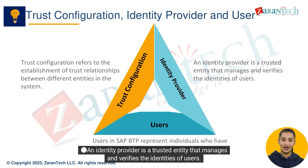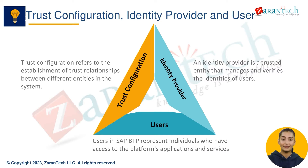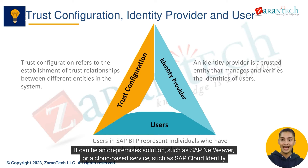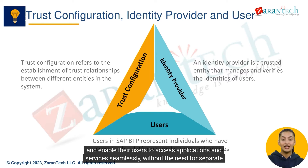An identity provider is a trusted entity that manages and verifies the identities of users. In SAP BTP, the identity provider authenticates users and provides the necessary credentials to access the platform. It can be an on-premises solution such as SAP NetWeaver, or a cloud-based service such as SAP Cloud Identity Authentication. By integrating an identity provider with SAP BTP, organizations can leverage existing user directories and enable their users to access applications and services seamlessly without the need for separate authentication.